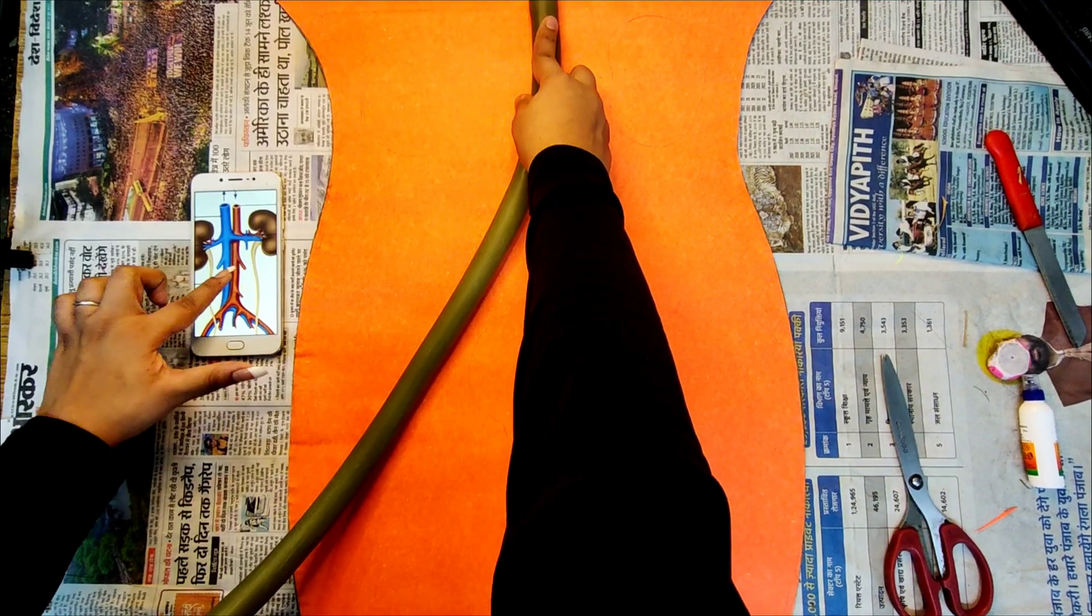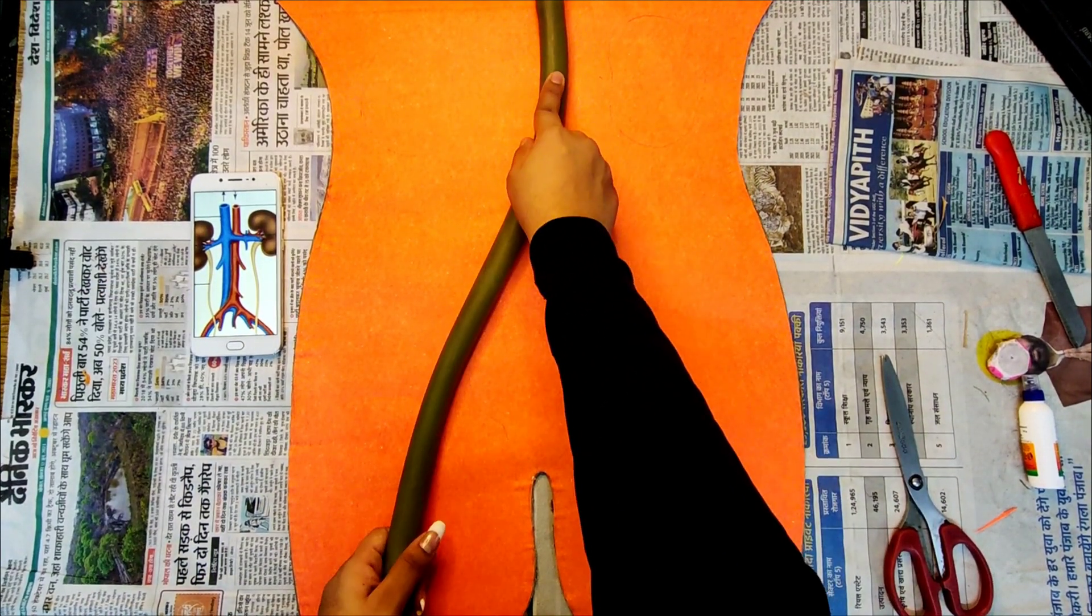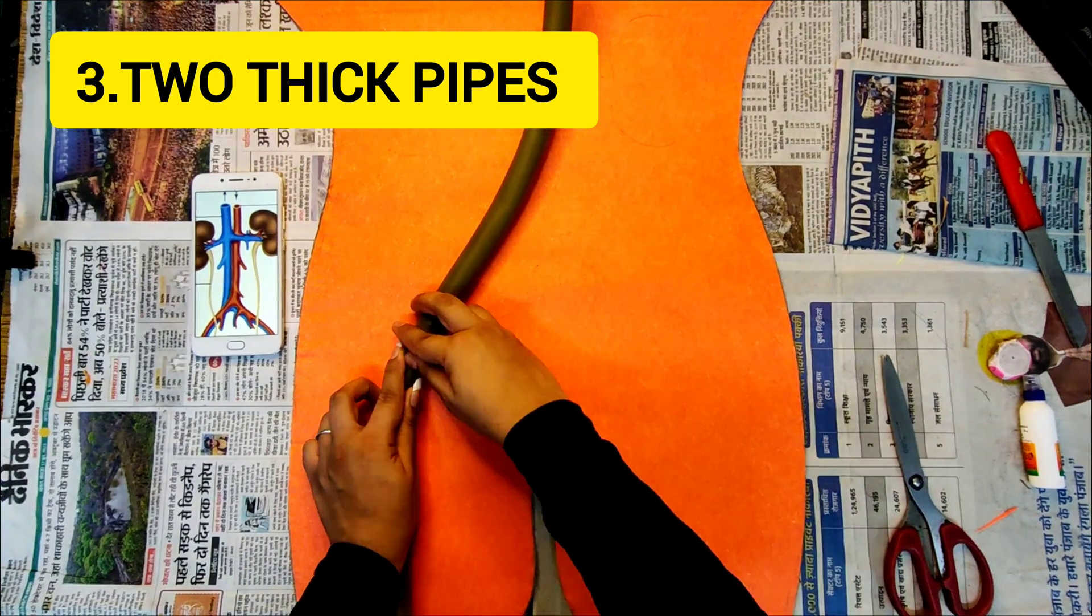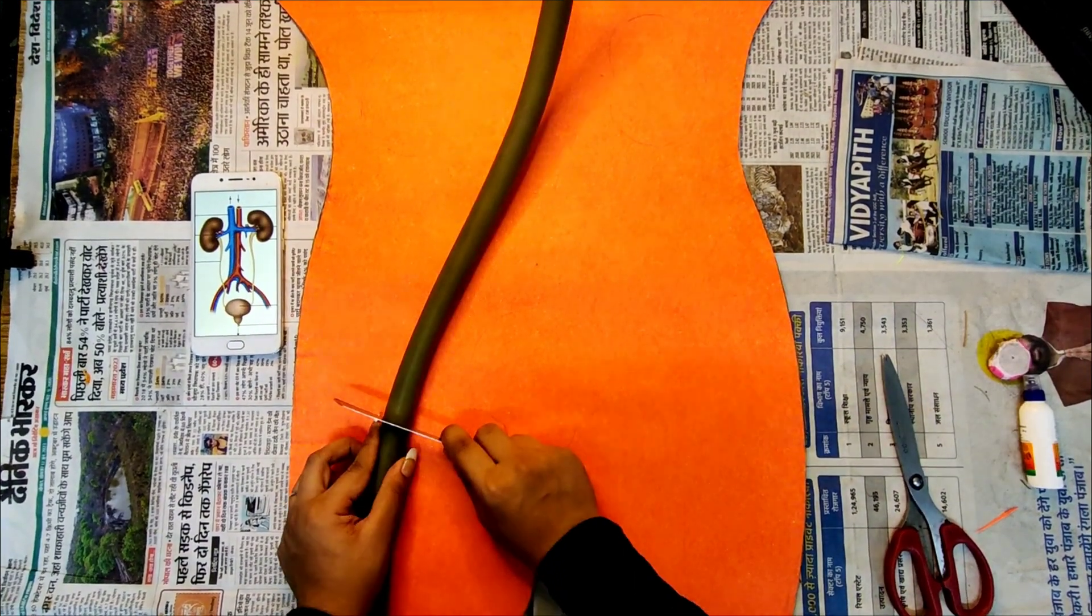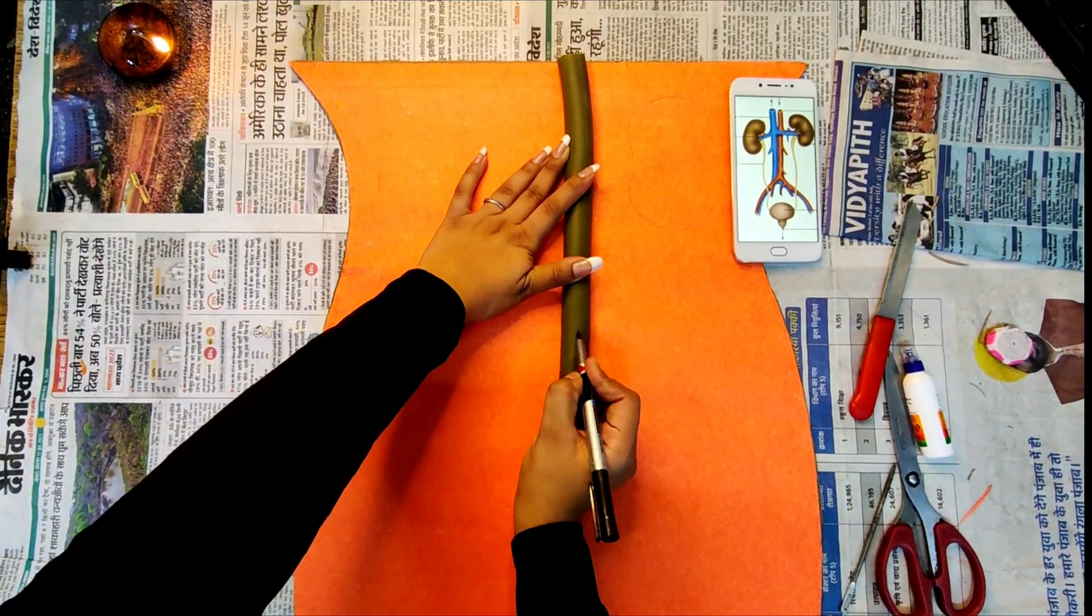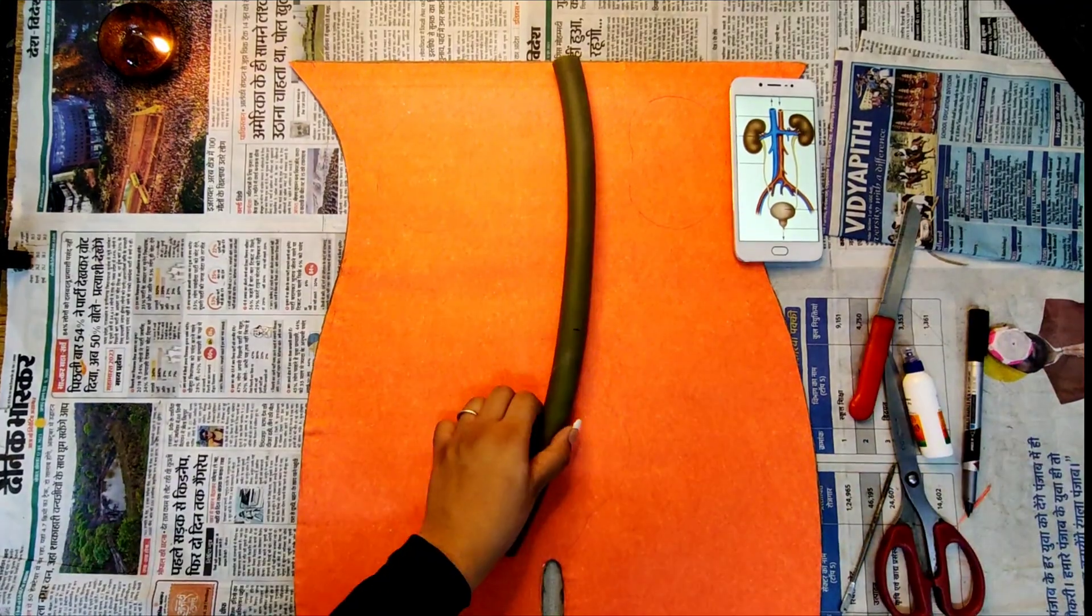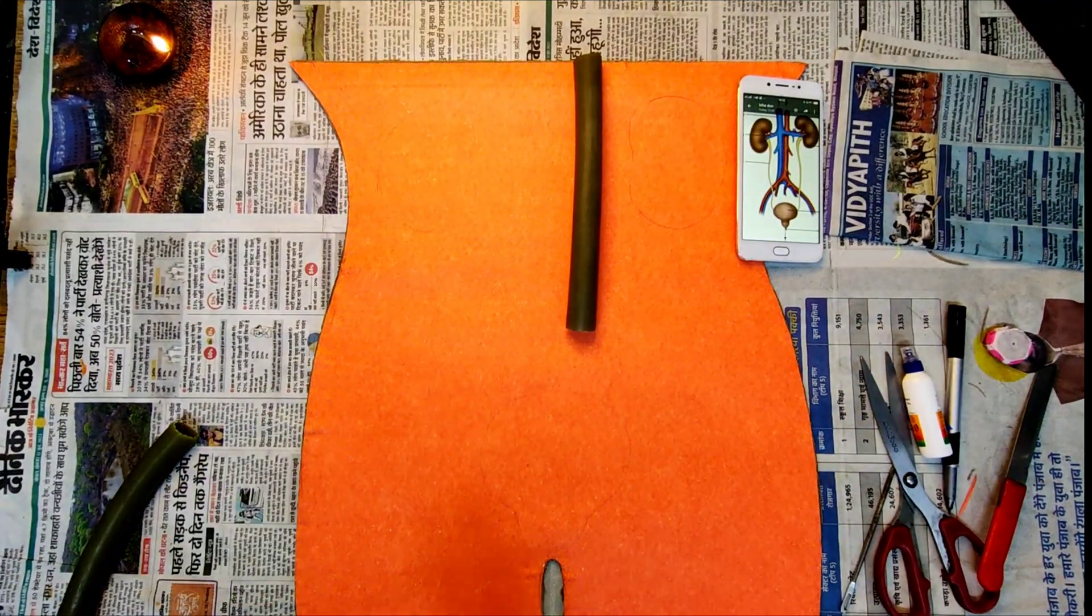For these two thick arteries, I've taken a long green pipe. As you can see in the video, I've cut this out and now I'm marking the holes from which the smaller portions of the arteries and veins are coming out.